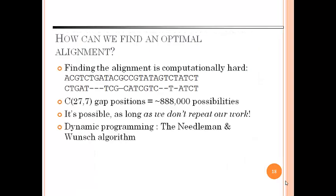Now how can we find an optimal alignment? Finding the alignment is computationally hard. For example, at the position of 27.7, gap positions are approximately 888,000 possibilities. So it's possible as long as we don't need to repeat our work.